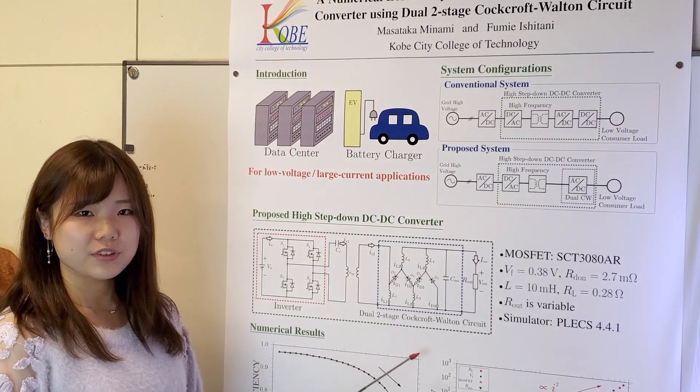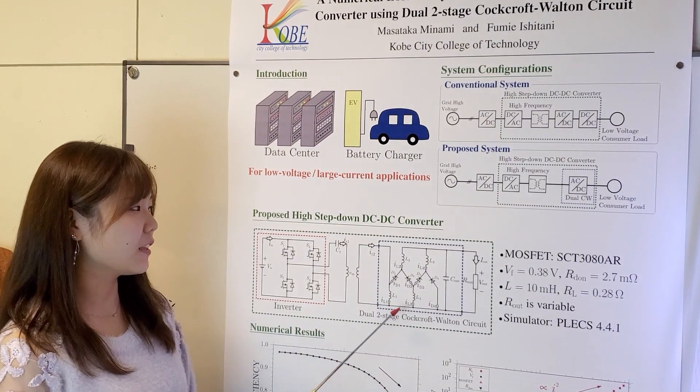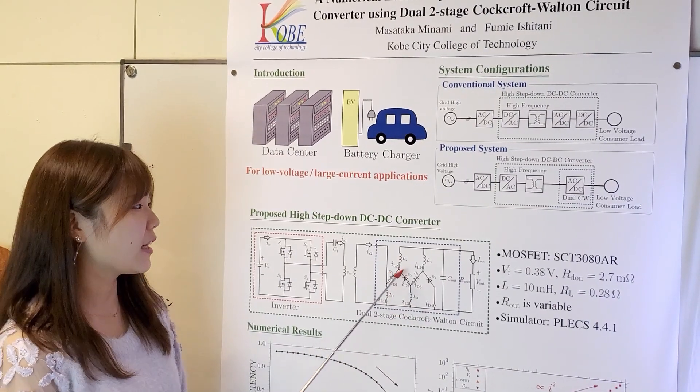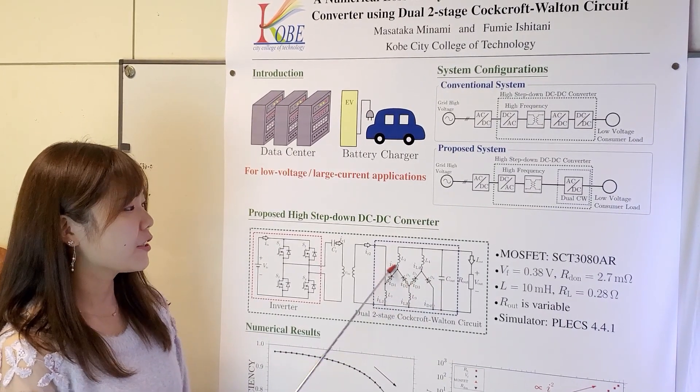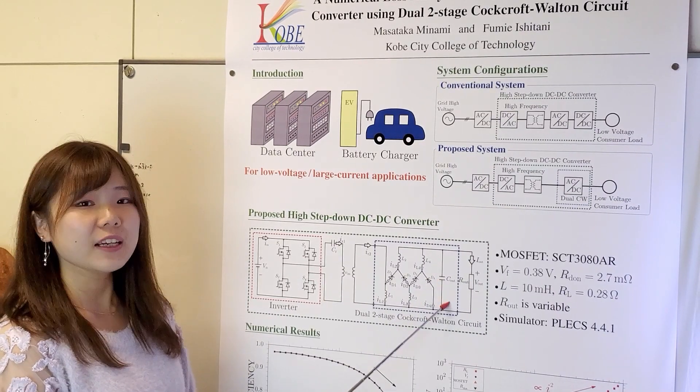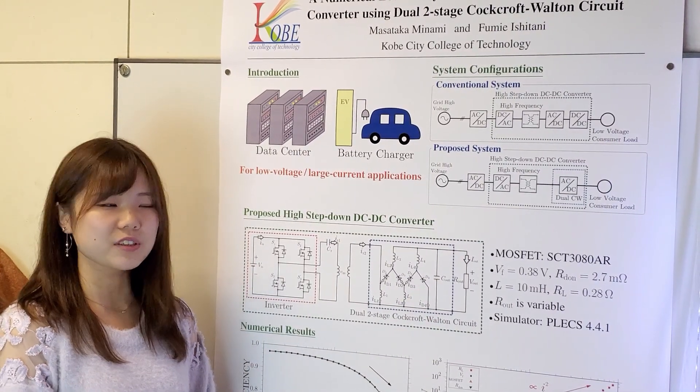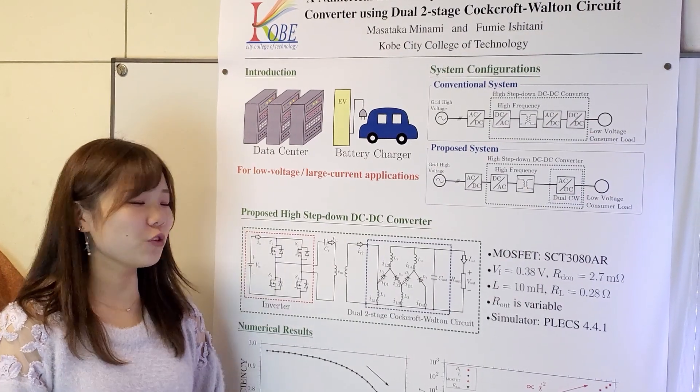This dual two-stage Cockcroft-Walton circuit consists of only passive components which are inductors, diodes, and capacitors. So, there are no switching and no conduction loss.